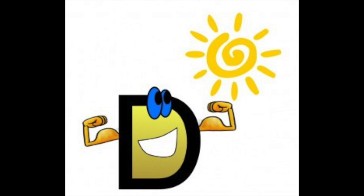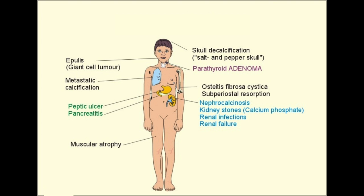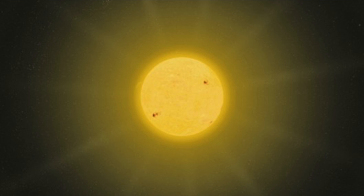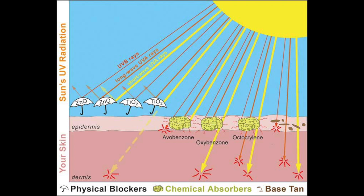Next came the evolution of lighter skin, which most likely evolved due to the need for vitamin D. Vitamin D is essential in developing and maintaining healthy bone structure, especially during fetal development. During the late third trimester of a pregnancy, the fetus enters rapid growth that taxes the mother's vitamin D supply. If the fetus does not receive enough vitamin D from the mother, he may develop hypocalcemia or rickets. Vitamin D is also important in healthy birth weights and in healthy brain development.